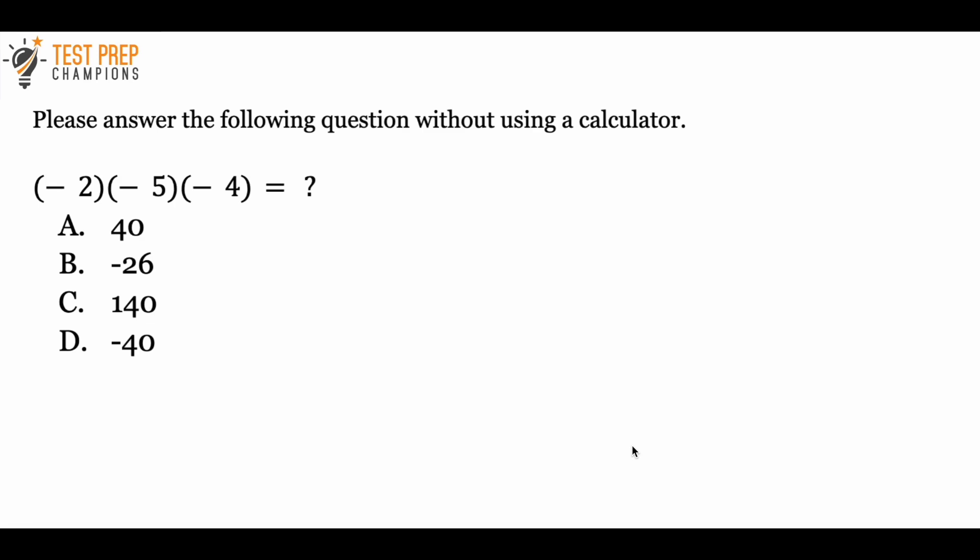The question is: negative 2 times negative 5 times negative 4 equals which of the following? Is the answer A, B, C, or D? Let me give you a chance now if you'd like to pause the video, try to figure this out, take all the time you need, and then whenever you're ready, just unpause the video and we'll talk about it.